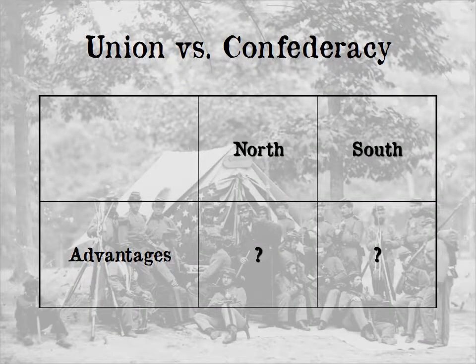We're going to look at the relative advantages and disadvantages of each side. If you know the advantages of each side, you essentially know the disadvantages, since advantages on one side usually imply disadvantages on the other. You can make a T-chart with southern advantages on one side and northern advantages on the other. By analyzing these, we can better understand why the North won the war — and yes, the North does win.